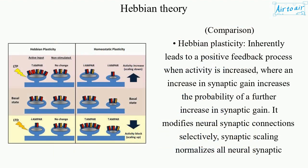Hebbian plasticity inherently leads to a positive feedback process when activity is increased, where an increase in synaptic gain increases the probability of a further increase in synaptic gain. It modifies neural synaptic connections selectively.